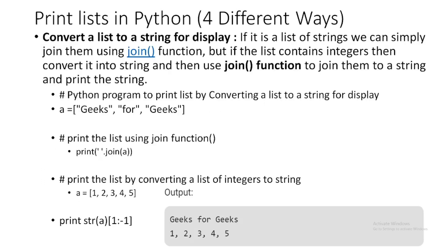Another way is to convert a list to a string for display. If you have a list of strings, you can simply join them using the join() function. But if the list contains integers, first convert each element to a string and then use join() to combine them and print the result.